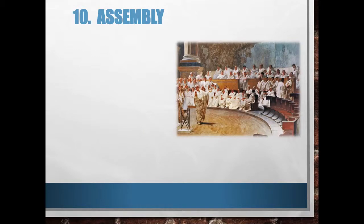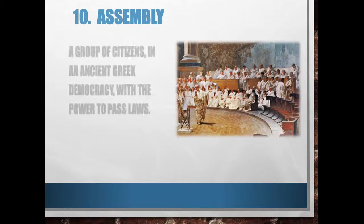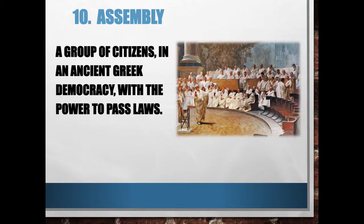The assembly is where citizens got together to make decisions in ancient Greece. The picture shown is actually of the Roman senate, but it is a form of assembly. Many states call the lower house of their legislature the assembly as well, which basically means the place where people get together to make decisions. In ancient Greece, that place was called the assembly.